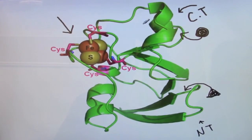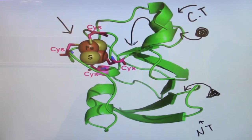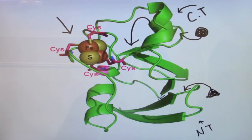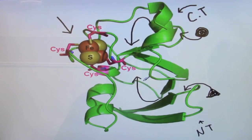This conformational change results in a folding action of the protein, specifically the C-terminus and the N-terminus, towards one another.